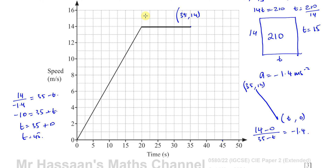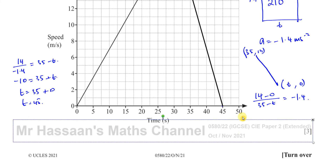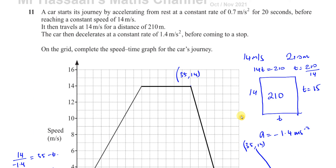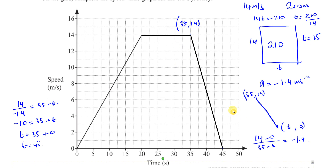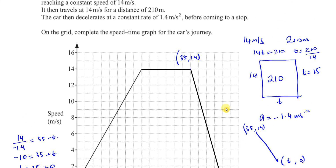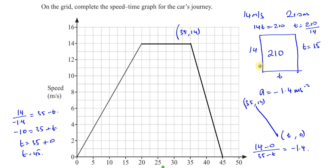So the rest of the journey is a straight line declining from (35, 14) down to (45, 0). That completes the speed-time graph for the entire journey.